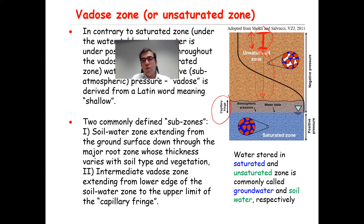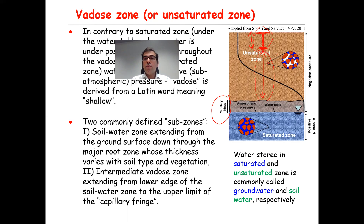Water stored in the saturated and unsaturated zones is commonly called groundwater and soil water, respectively. The pressure in the unsaturated zone is negative. If you zoom in on the unsaturated zone, you see the pore space is filled by two phases: the blue indicates water and the white indicates air — as opposed to the saturated zone where all pores are fully filled by the liquid phase, water.